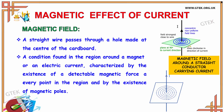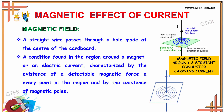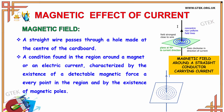You could see that a magnetic field around a straight conductor that is carrying current has been shown — this is called magnetic field. The field is strongest close to the wire, and a concentric non-uniform field line has been shown. The plane is maintained at a position of 90 degrees to the current direction, and the lines are clockwise in the direction of current.